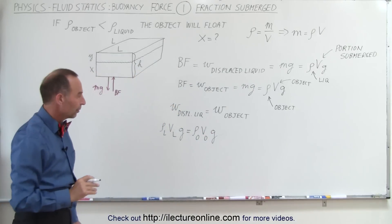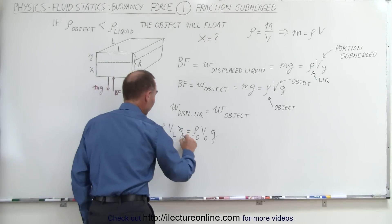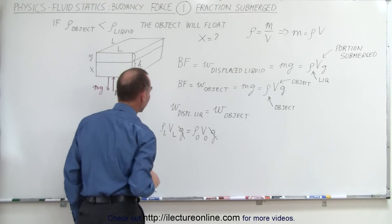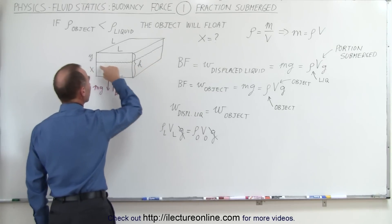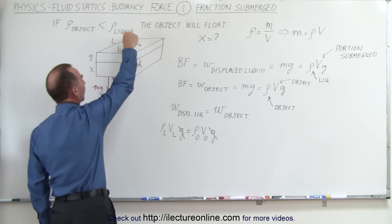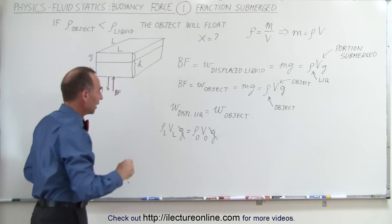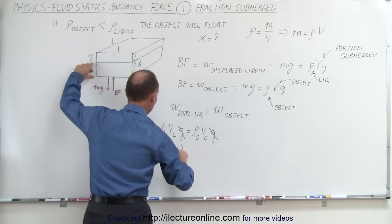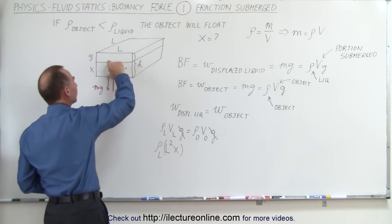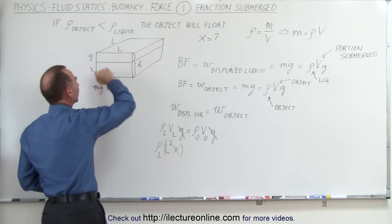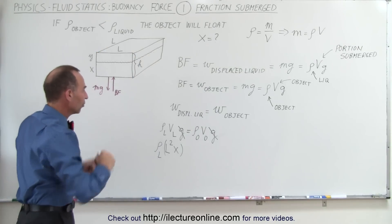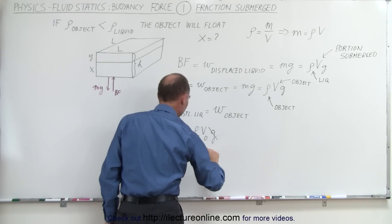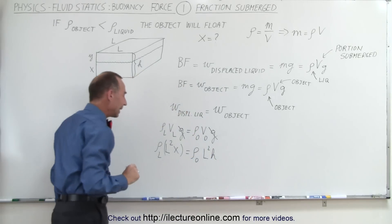Right away we realize that g can be cancelled out on both sides of the equation. We then substitute for each of the volumes. The volume of the displaced liquid is the submerged region. Assuming the cross-sectional area viewed from the top is l by l — a square object — we can write: density of the liquid times l² times x, where x is the portion in the vertical direction below the surface, h is the total height or thickness of the object, and y is the portion above the liquid. This equals the density of the object times the volume of the object, which is l² times h.